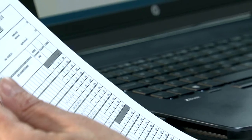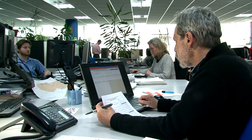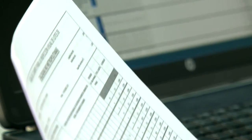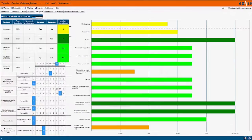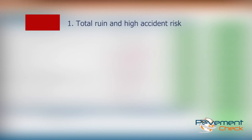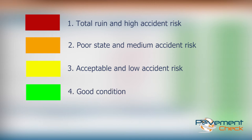PavementCheck has a complete and constantly updated database of common pavement defects. In accordance with the registered incidences, the infrastructure is classified into five possible levels: total ruin and high accident risk; poor state and medium accident risk; acceptable and low accident risk; good condition; excellent condition.